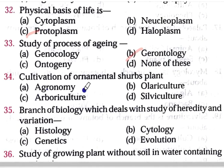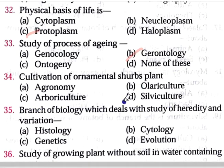Next question: Cultivation of ornamental shrubs and plants. Option A is agronomy, option B is allery culture, option C is herbiculture, option D is silviculture.